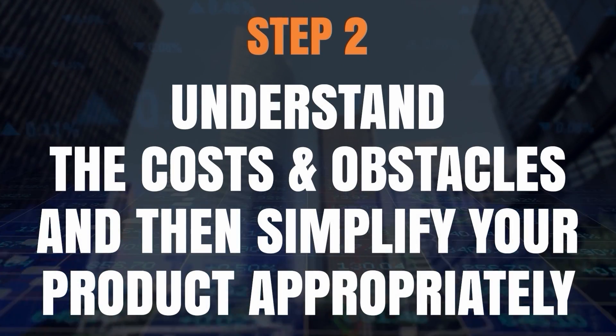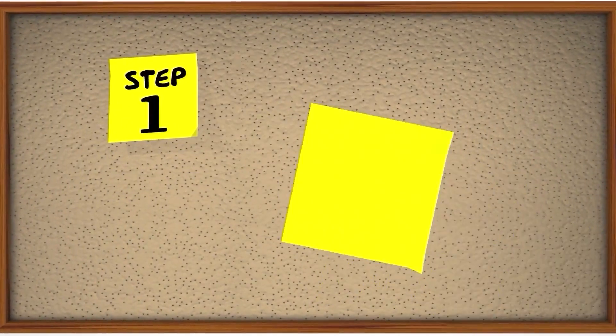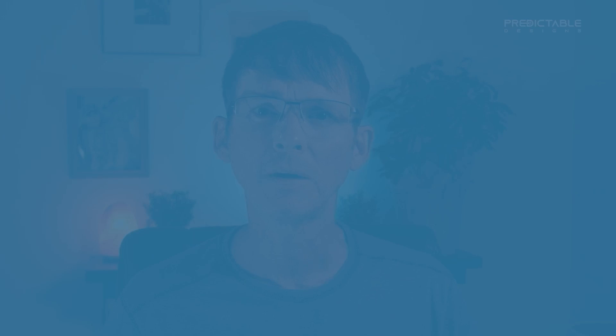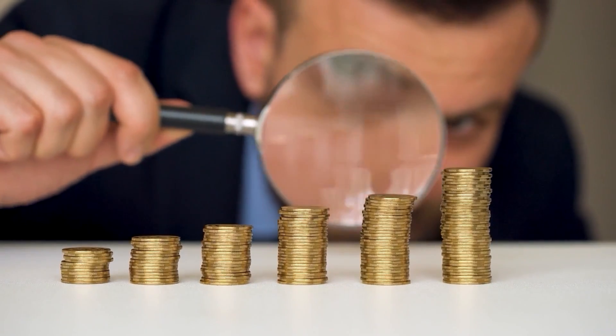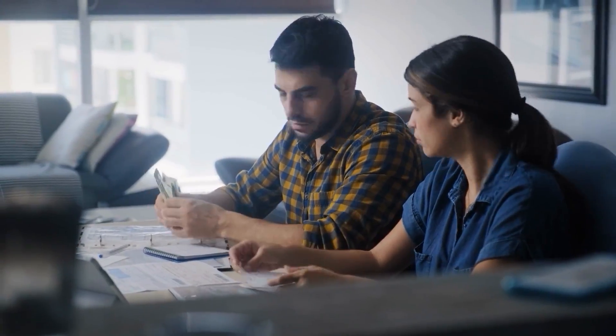Step number two is to understand the costs and obstacles and then simplify your product appropriately. Most entrepreneurs dive headfirst into all the details of fully developing their product, and only after they finish development do they finally begin thinking about the next steps. This is a huge mistake. To have a realistic chance of success, you absolutely must understand all of the costs and obstacles you must surpass to get your product to market. Development costs will be your first major financial obstacle, and whether you plan to bootstrap or raise outside funding, you need an accurate estimate — otherwise you may run out of money.